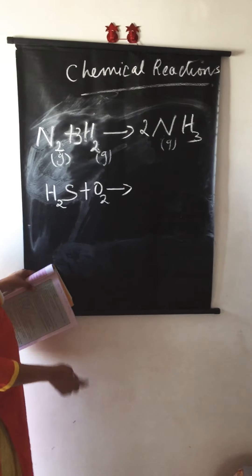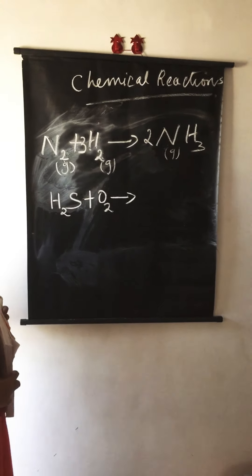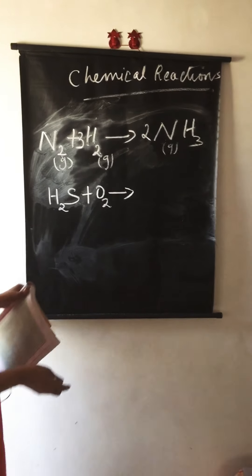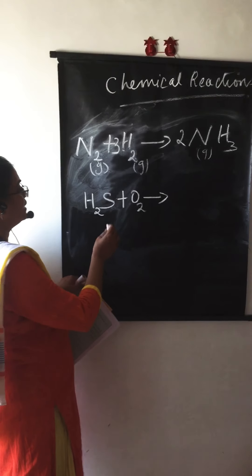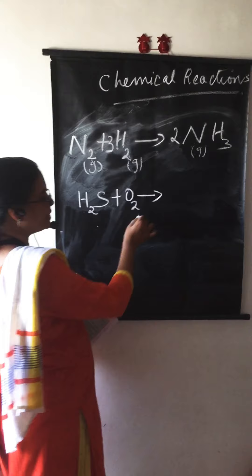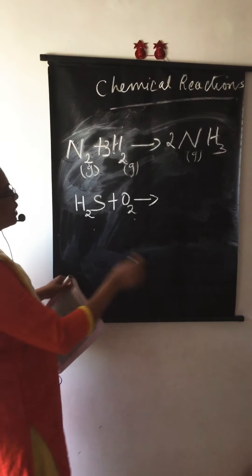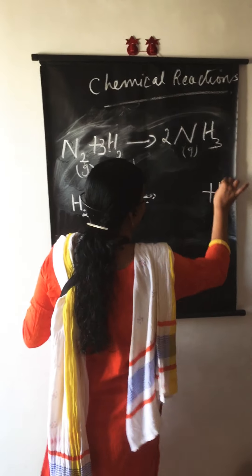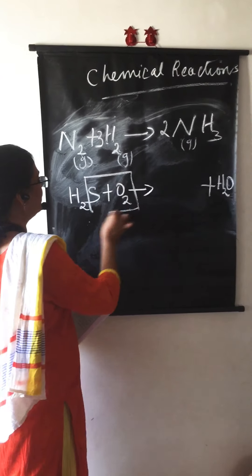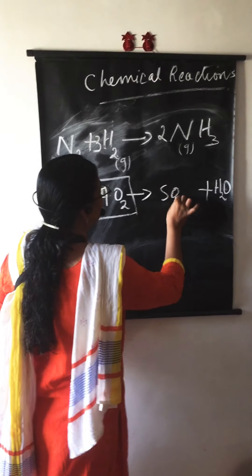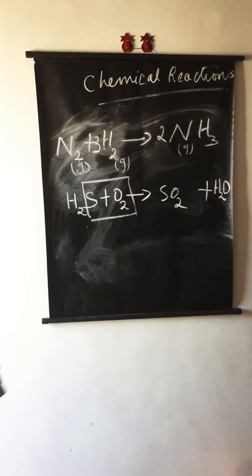The product is given: water and sulfur dioxide. If you don't know the product — if hydrogen and oxygen are on the left-hand side, one product will always be water. The other product will be SO2. So the equation is: H2S + O2 → H2O + SO2. Now try to balance this equation.